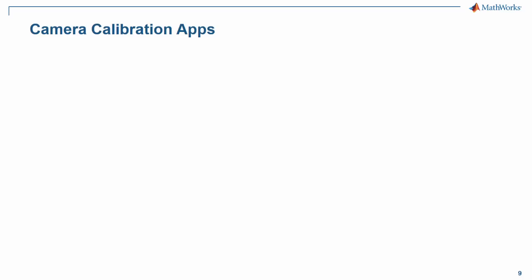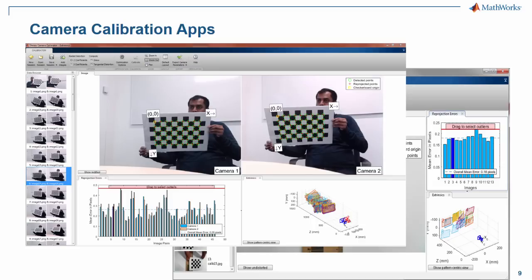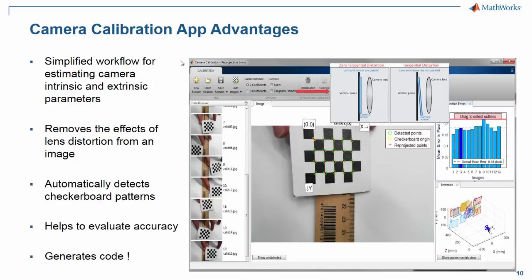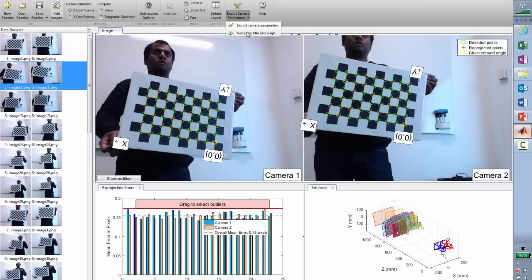Let's summarize what we've just seen. There are different kinds of apps available — for a single camera you can use the camera calibrator app, or for multiple views you can use the stereo camera calibrator app. Work with the threshold, find an acceptable error level, and export the parameters to the workspace. The advantage of the camera calibration app is a simplified workflow. It also removes effects of lens distortion and tangential distortion, automatically detects checkerboard patterns, and with the error levels you can improve accuracy. You can also generate a MATLAB script from the app.